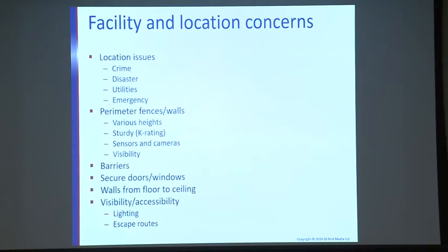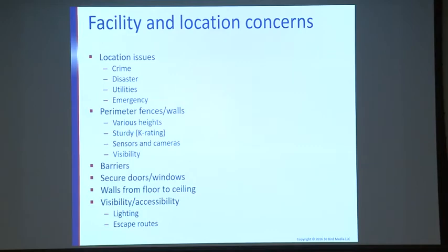When looking at a location for your building, consider how much crime is in the area — the police department will have crime statistics for you. Also consider how the location handles certain types of disasters: flooding near a river, hurricanes, tornadoes, ice storms, or blizzards. These are important considerations for site selection.